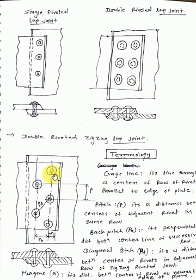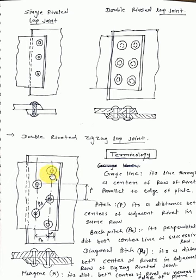In the zigzag type, you can see here there are 2 rows, but in a zigzag manner. So we call this a double riveted zigzag type lap joint. This classification becomes clear from the figures shown.